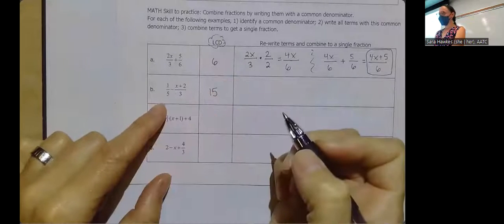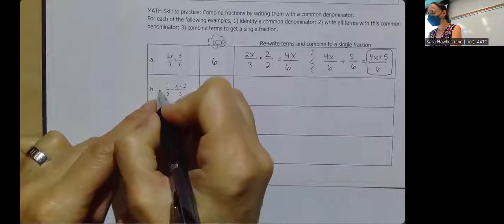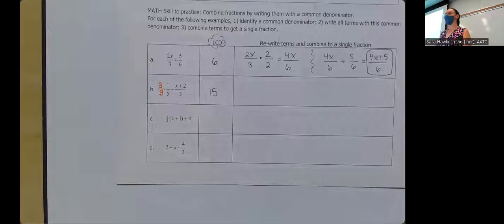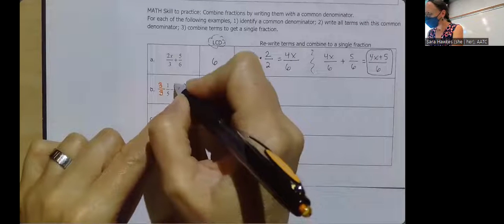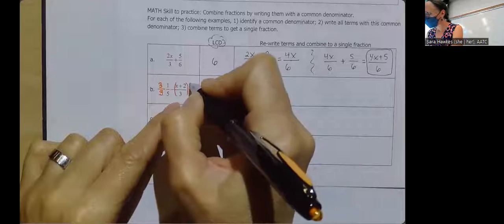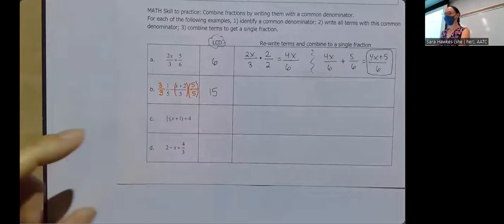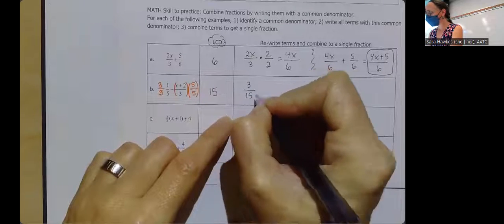So I'm going to rewrite each of these. That one-fifth — I'm going to rewrite to give it a denominator of 15. I'm thinking: why do I have to multiply five by to turn it into a 15? And that's going to be three. So that I don't change the problem, I need to be multiplying by a one — because if I multiply by three over three, I haven't changed that number. Same kind of thing here with my x plus two over three — I'm going to go ahead and put that in parentheses, just because visually it's a little distracting. I need that denominator to be a five, so I'm going to multiply the numerator by five also.